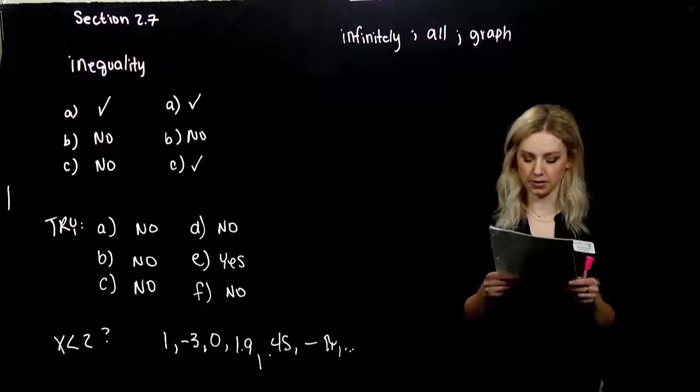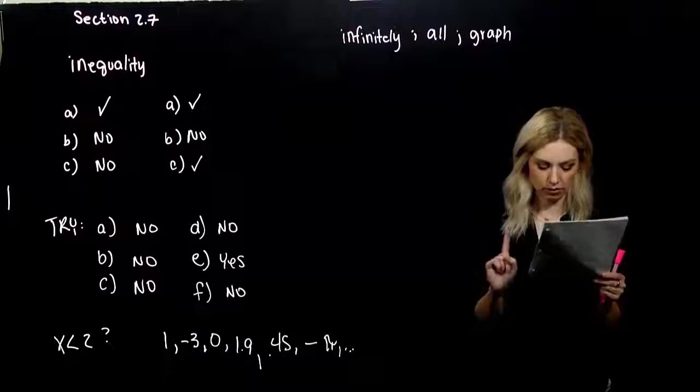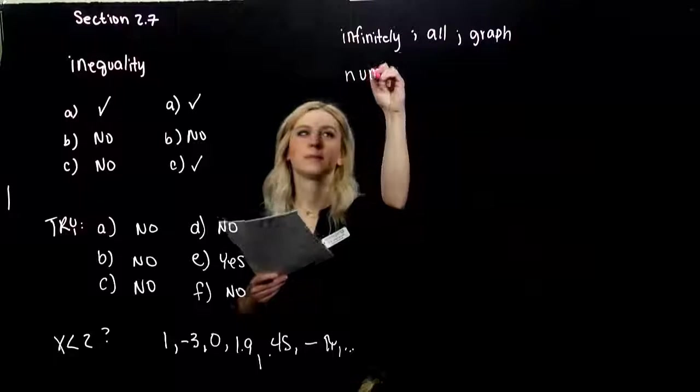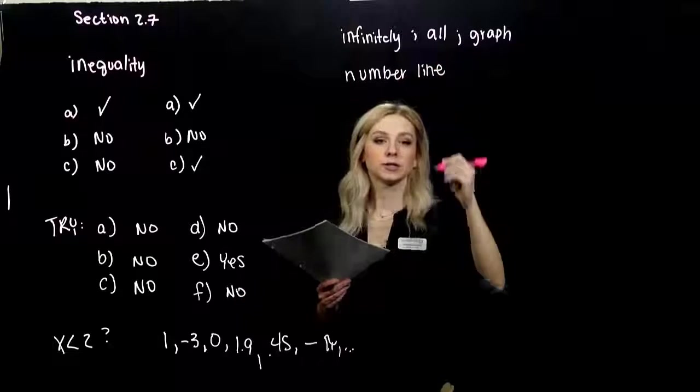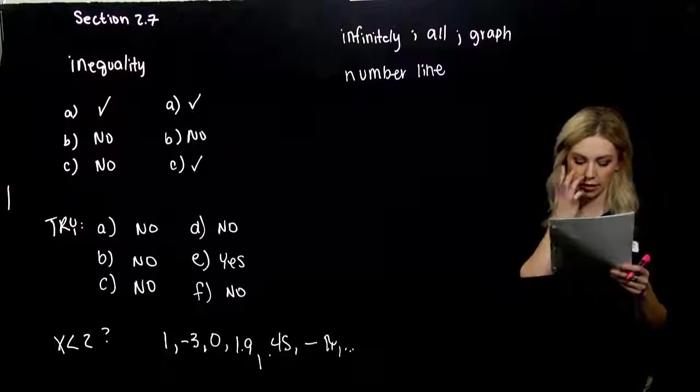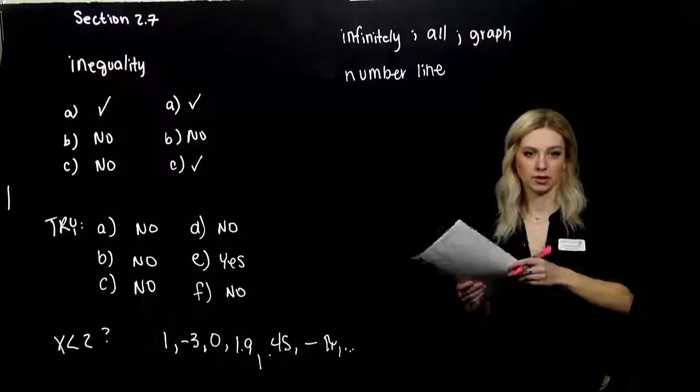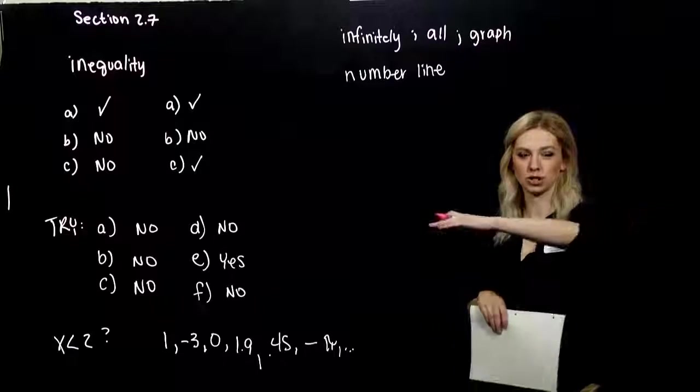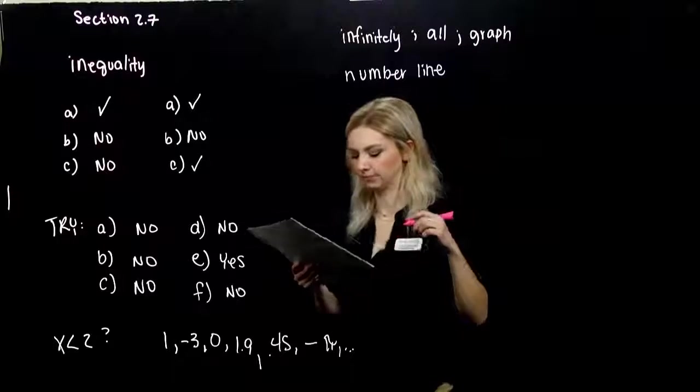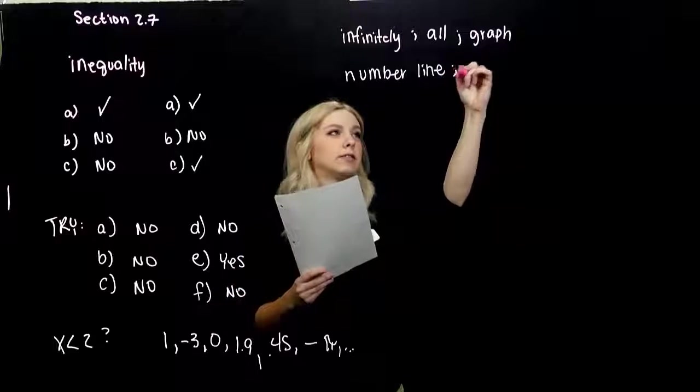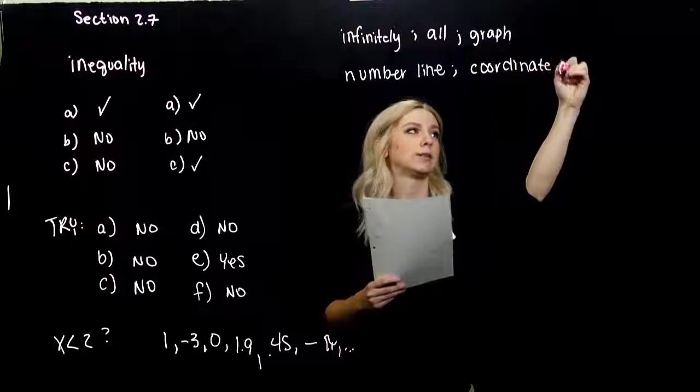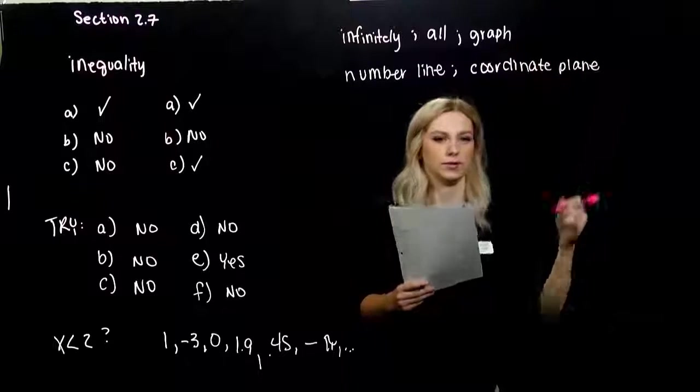We have one variable involved. It's one-dimensional, so it can be graphed on a number line. If we have more dimensions, we need more planes. An inequality in two variables can be graphed on a coordinate plane. Because right now, I have a number line, one dimension. If I introduce another one, now I need another axis to look at. Two variables can be graphed on the coordinate plane, or the Cartesian plane, if you're used to hearing that lingo.